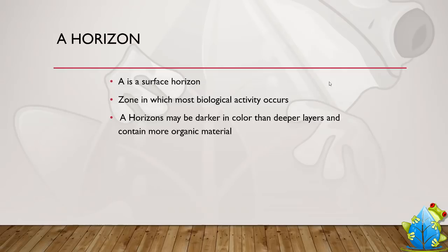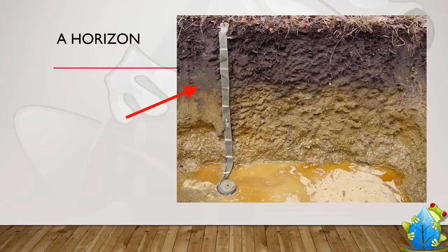Now the next horizon is the A horizon. The A and the O are both the surface horizons, and the A horizon is where most of the biological activity occurs. These tend to be darker than the other layers because of all the organic matter. The O horizon, if it's on top, is largely black decomposing material, and as you leach that into the lower horizons, it's going to darken those soils up. We have certain soil indicators that are indicative of that. Here's an example of an A horizon — right here, we have all this organic matter coming from the leaf litter that's working its way in.